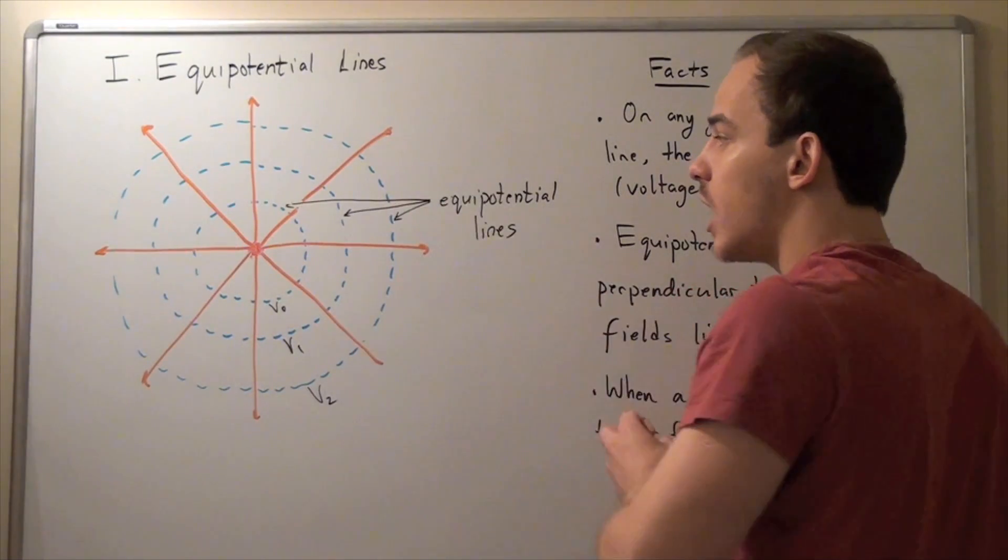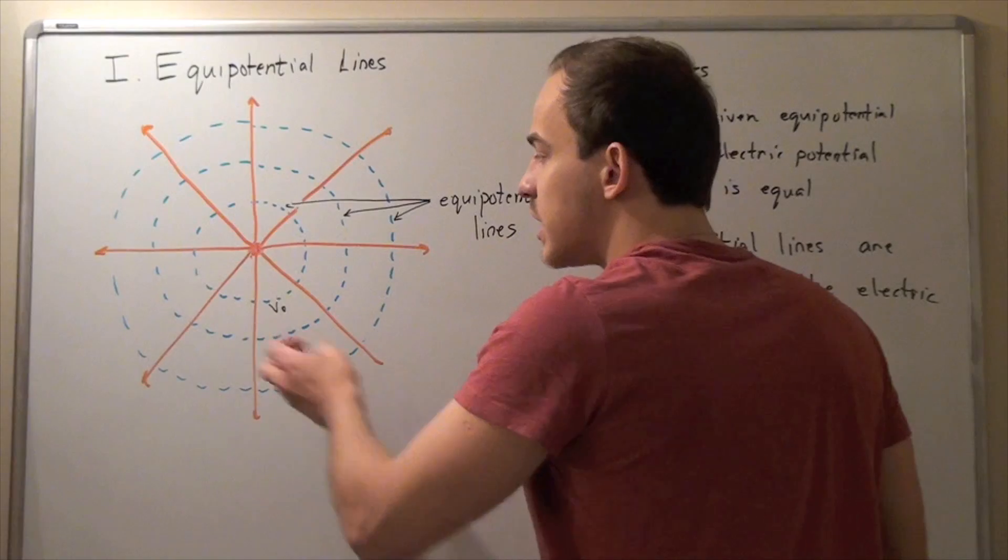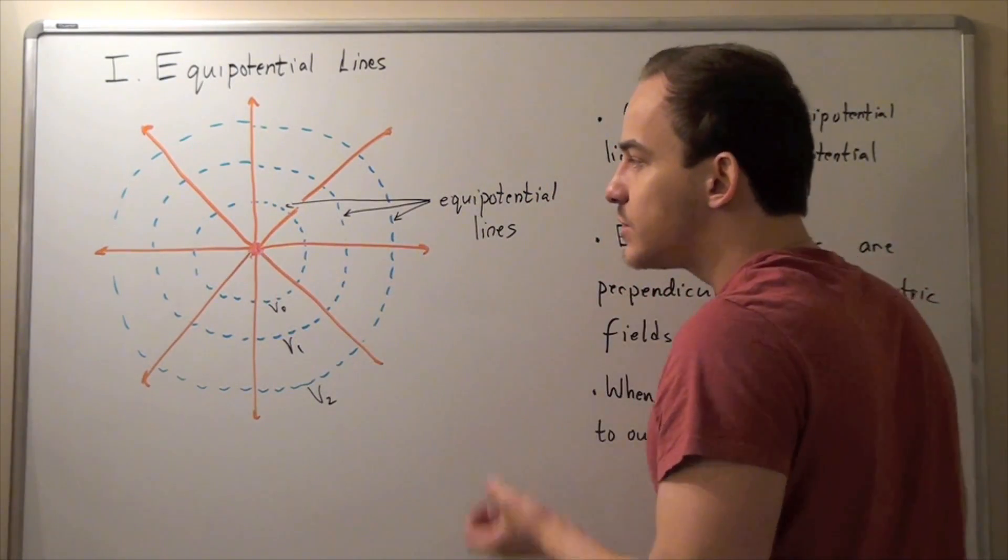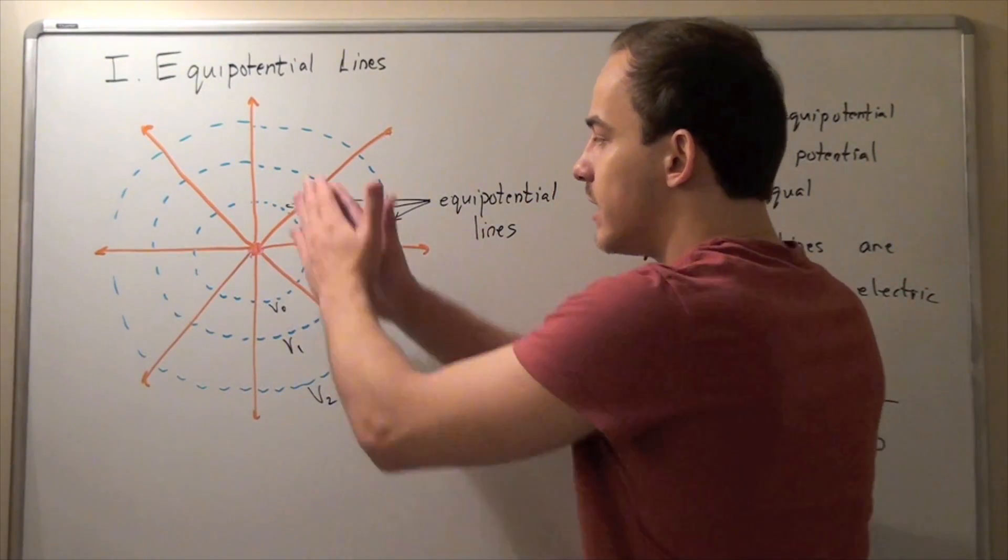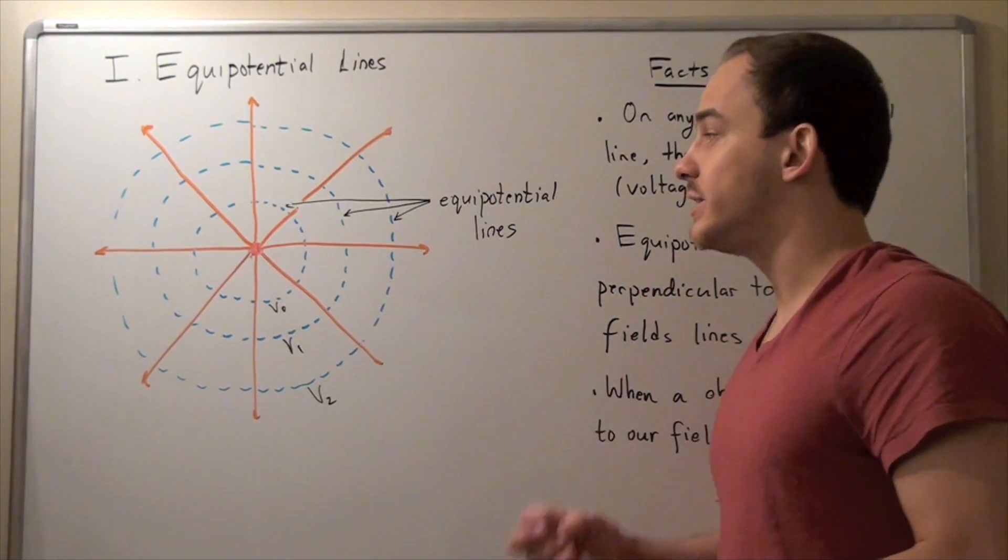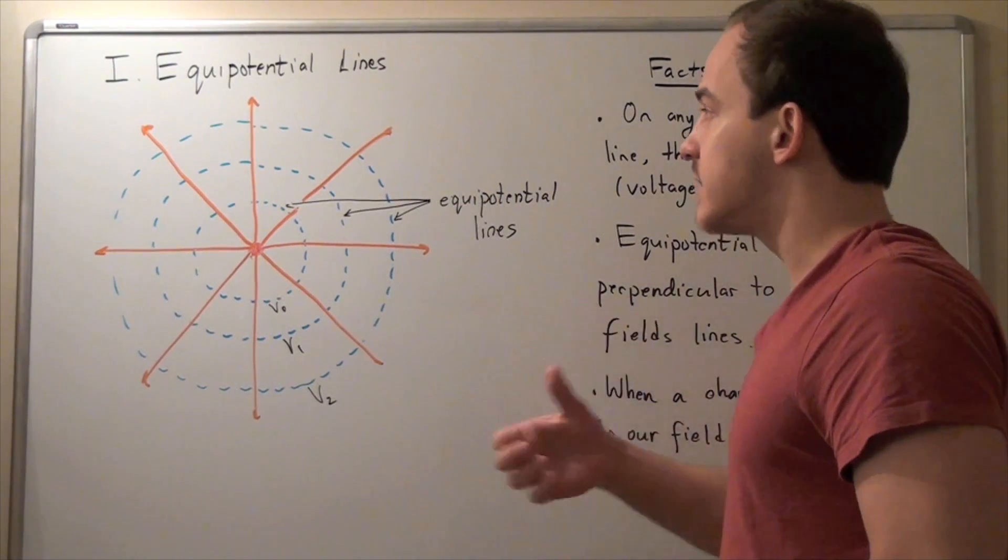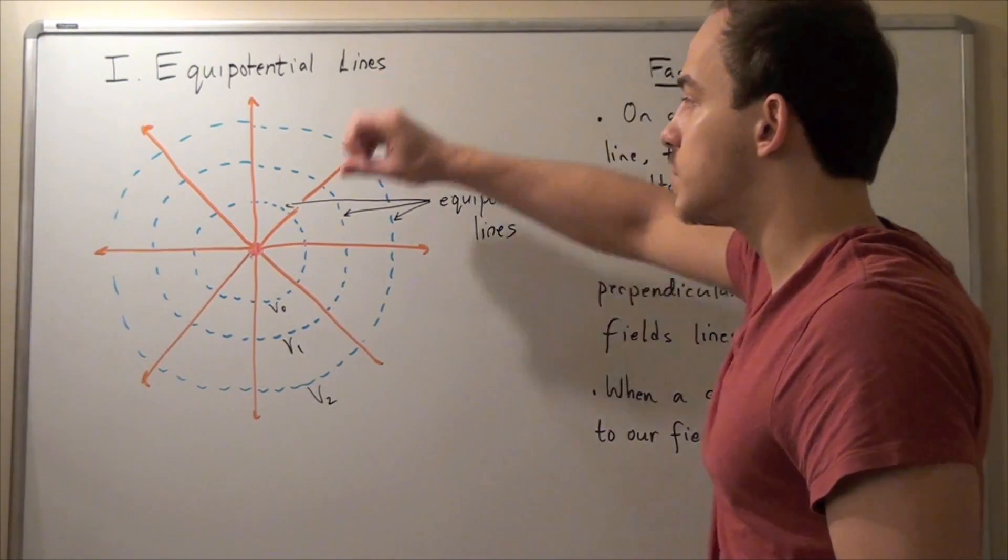And equal potential lines are always perpendicular to my lines of force. Now, note that, in this case, my lines of force end up being straight lines. But sometimes, my lines of force are not straight lines. Sometimes, my field lines are curved.